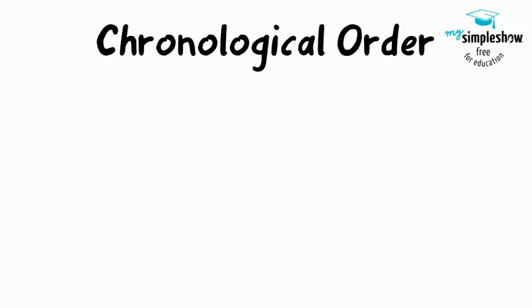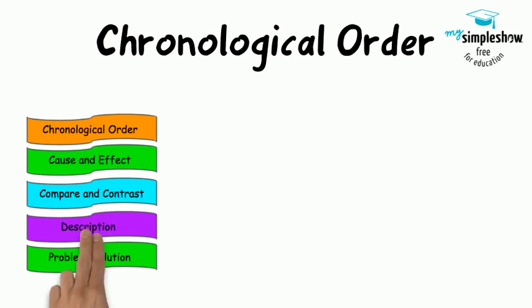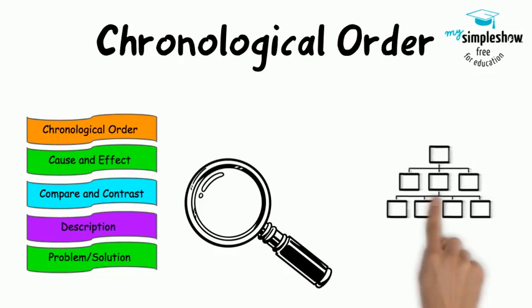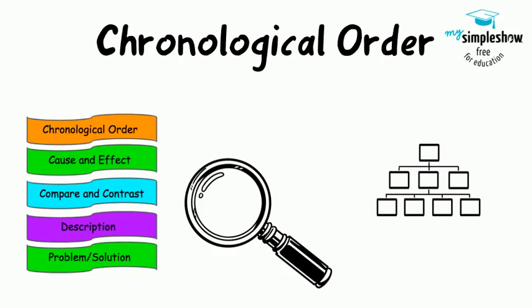Chronological order or sequence is one of the five major types of text structure. There are certain clue words that authors use to let you know that they are organizing their writing using sequence or chronological order. Let's look at some of those words.